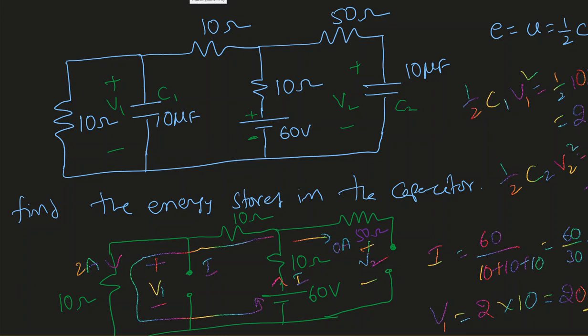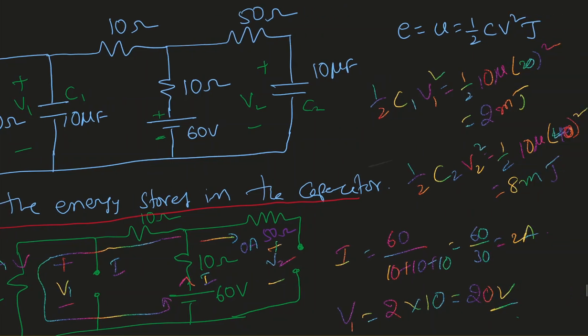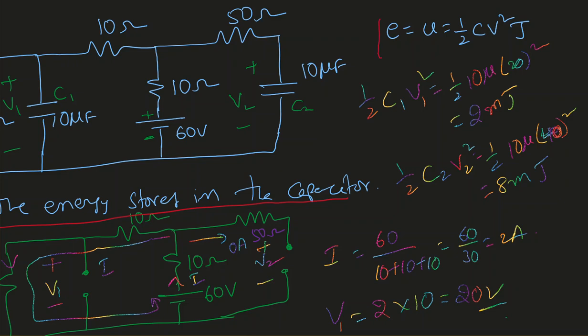In this video, I'm going to solve an example with resistors and capacitors in a circuit. The question is asking about finding the energy stored in each capacitor. There are two capacitors here. All we need to do is find the energy stored in each capacitor. We know the C value — all we need to know is the V value, how much is the voltage across each capacitor.